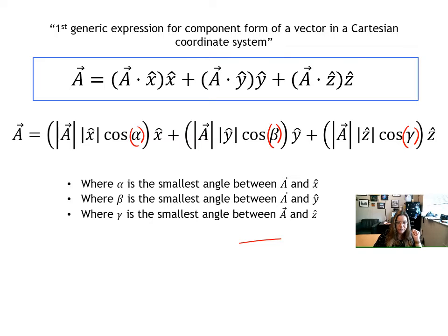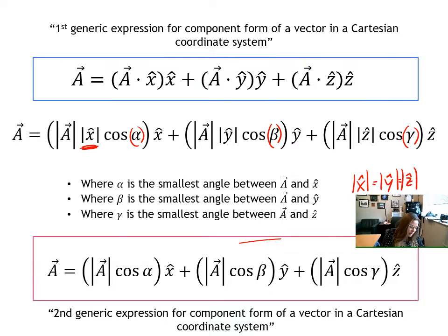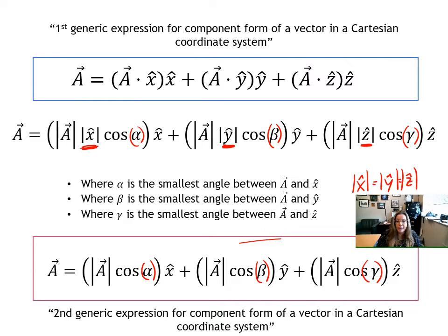Since the norm of any unit vector is one, all instances of norm of x-hat, norm of y-hat, and norm of z-hat in the mid expression simply become the number one. Reducing that gives you what I call the second generic expression for a vector in component form. I've used the definition of the dot product to simplify the first generic expression. Now you just need to plug in the norm of the vector and the angles alpha, beta, and gamma that you identified in the previous step. This is the expression you'll probably use more often, jumping right into it as you put your vectors into component form.